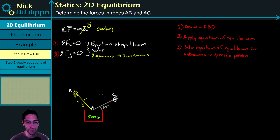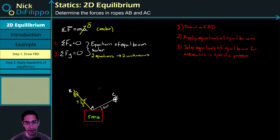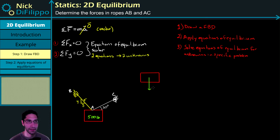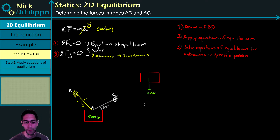Following our checklist, step one is to draw a free body diagram of this block. We're still assuming everything is a particle, so it has no dimensions. Looking at the forces on this block, we have the weight force. The weight is already in pounds, so we don't need to multiply by gravity. We have 500 pounds pointing straight down.